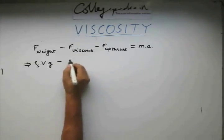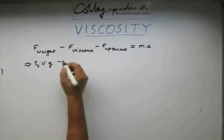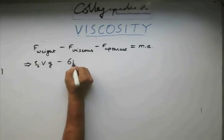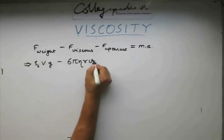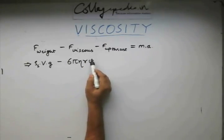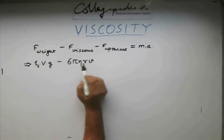The viscous force, as we stated earlier from Stokes law, is going to be 6πηrv. This v is the instantaneous velocity of that object.